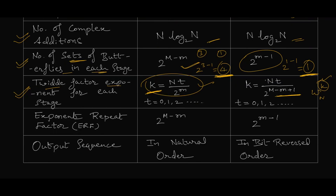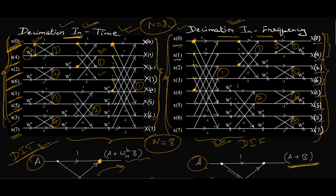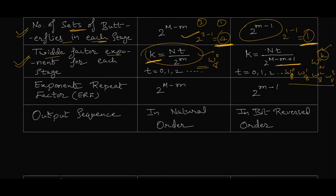Therefore for DIT stage 1 there is only one twiddle factor value, but for DIF stage 1 there are four different values: W_8^0, W_8^1, W_8^2, and W_8^3. You can verify this in the butterfly diagram — all butterflies in the first stage of DIT share the same twiddle factor, but for DIF all four values are different. For more details you can watch the lectures on DIT.